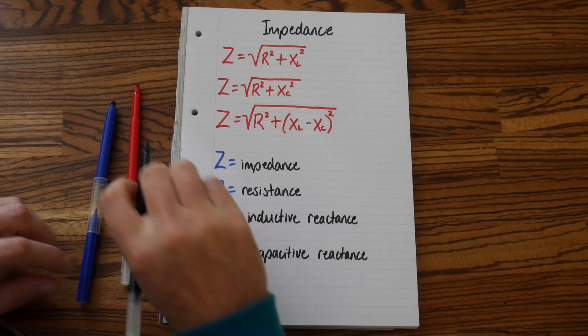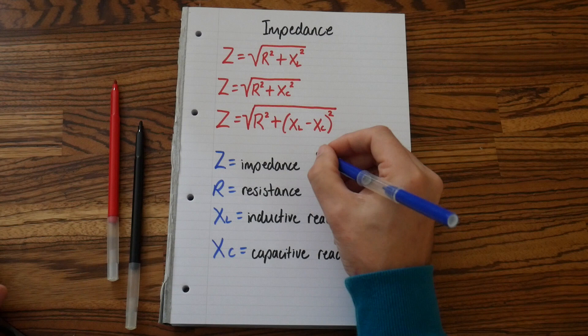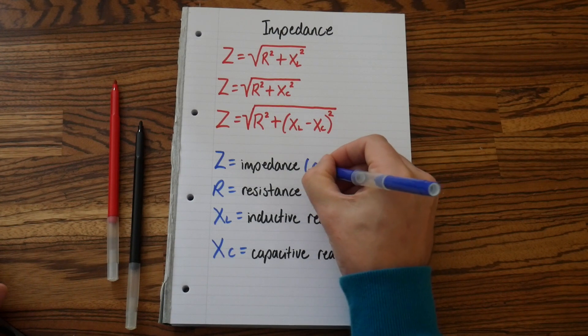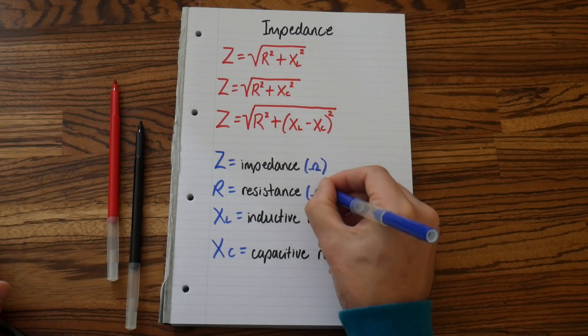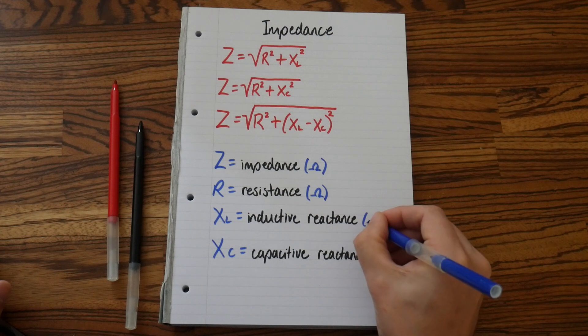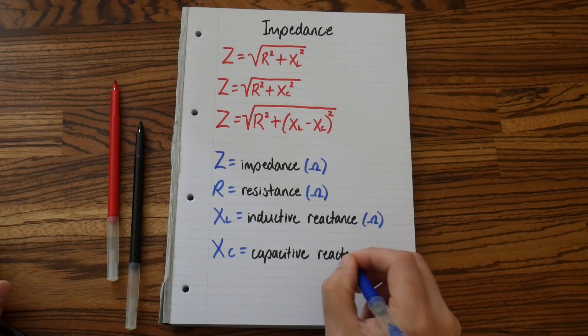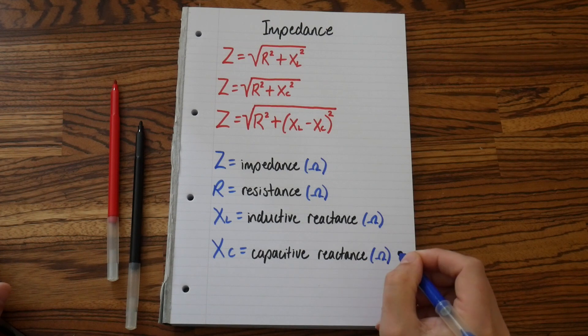Now, let's write down the SI unit. So, impedance is measured in ohms. Resistance, ohms. Reactance is ohms. Reactance is ohms.